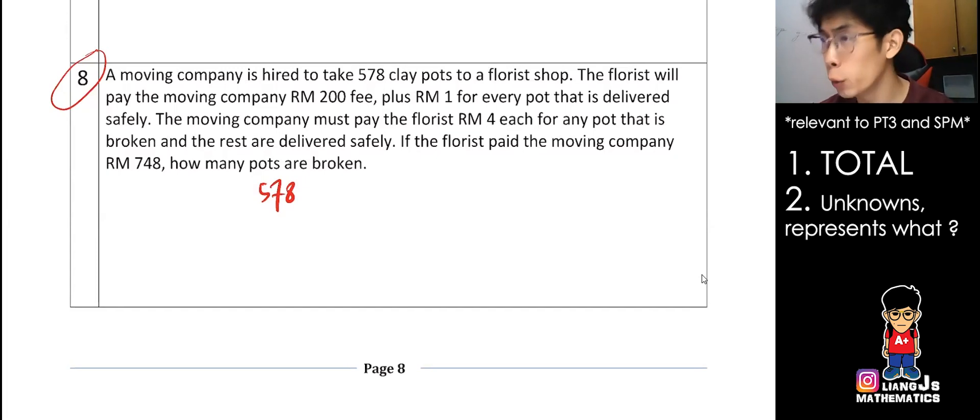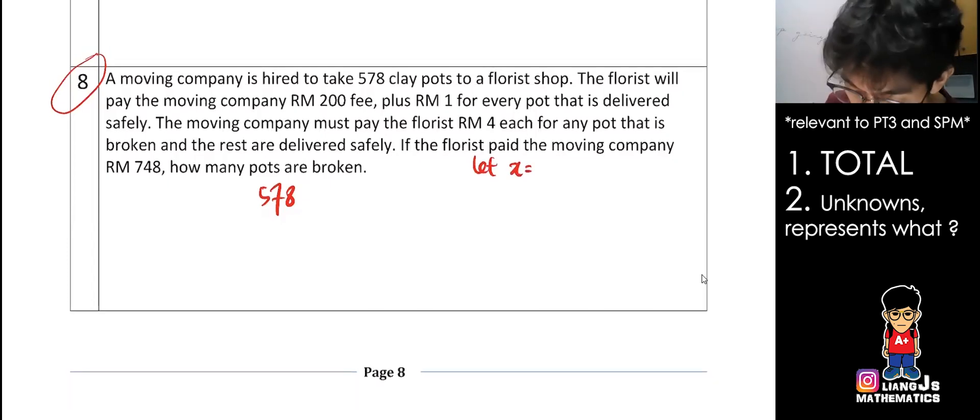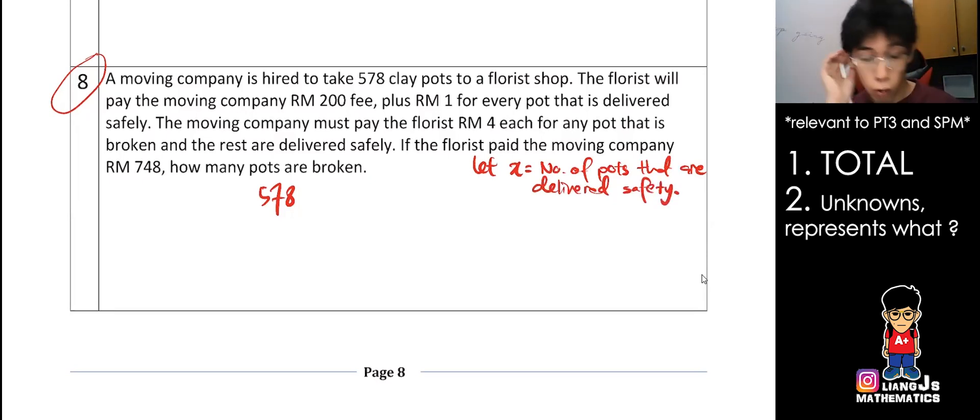So everyone, do you notice there is one unknown there? What is that unknown? Why not I tell you. The unknown is, can you tell me how many pots delivered safely? They didn't say, means unknown. So my first unknown I put x. So normally I'll put that x in. So it will be the number of pots that are delivered safely. Ignore my English. So that's my first unknown - how many pots delivered safely?